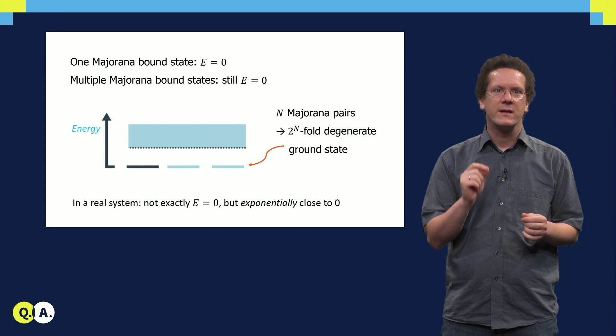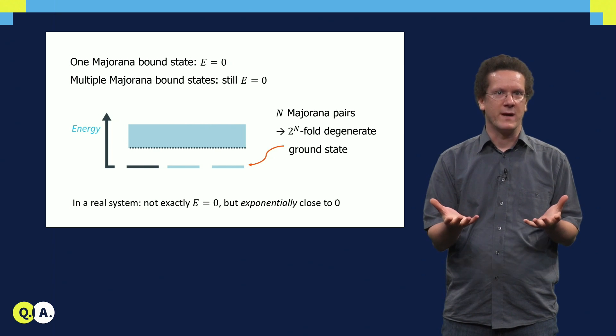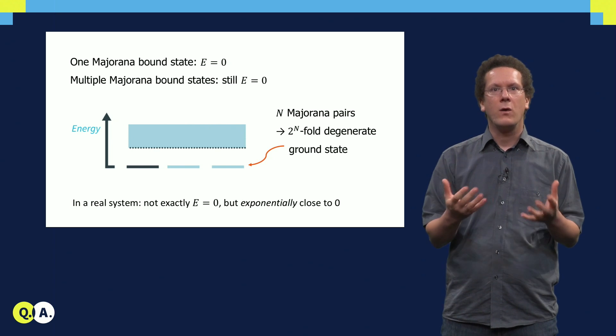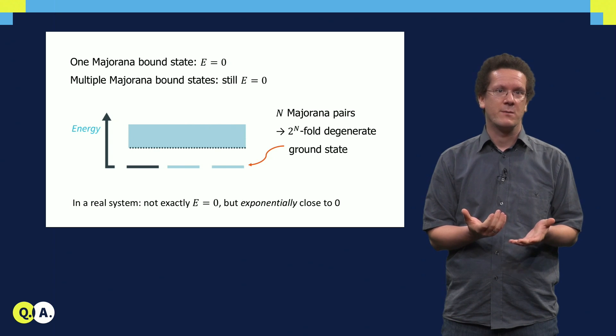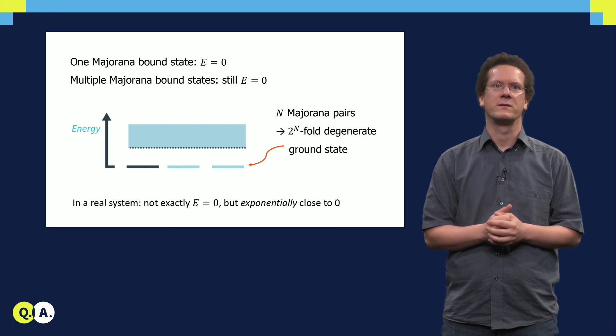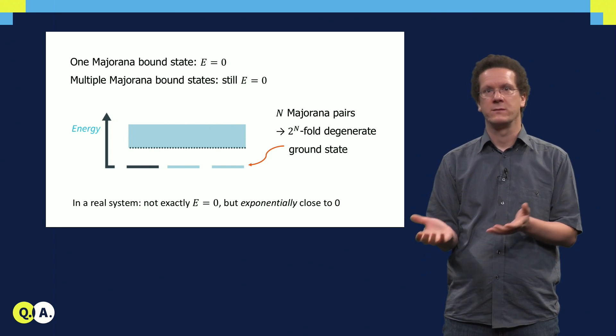Now, there is actually an interesting aspect about Majorana bound states being at zero energy. You can have multiple Majorana pairs, and the states you can make out of these Majorana pairs all have zero energy too. So with n Majorana bound state pairs, you actually have a 2 to the n-fold degenerate ground state, because each pair can be occupied or not occupied.